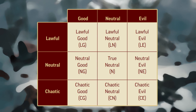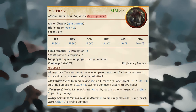A creature's alignment reflects its disposition. Alignment indicates whether a creature leans towards law or chaos and good or evil, or whether a creature is neutral. Some creatures, such as the veteran, can have any alignment — in other words, you choose the creature's alignment. Depending on the creature, its alignment might indicate a tendency or aversion towards law, chaos, good, or evil.